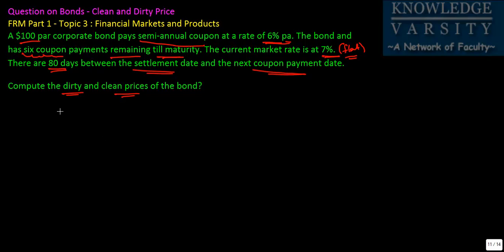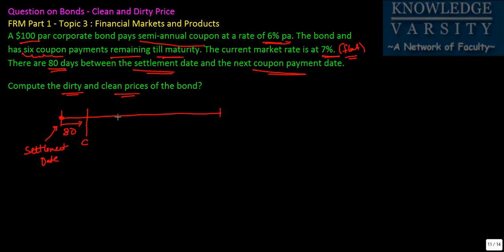If you structure the timeline for this problem, after 80 days from the settlement date you will get the first coupon, and then subsequent coupons. We will get a total of 6 coupons: 1, 2, 3, 4, 5, 6 coupons.